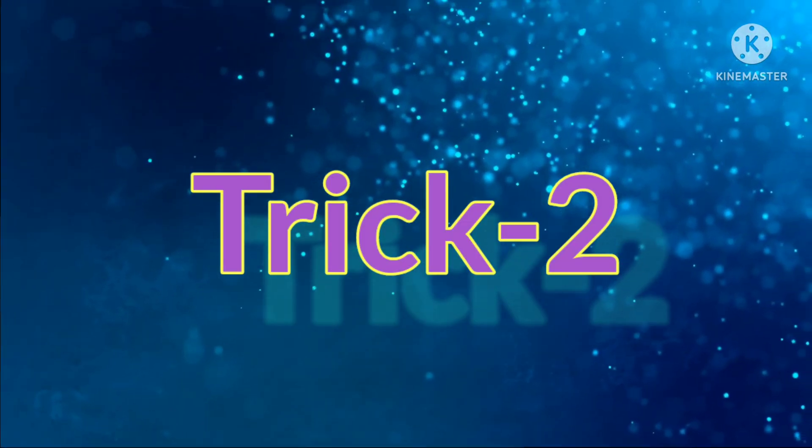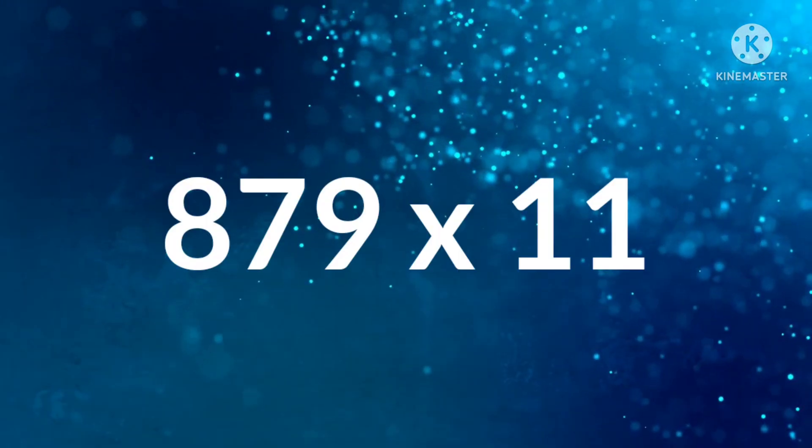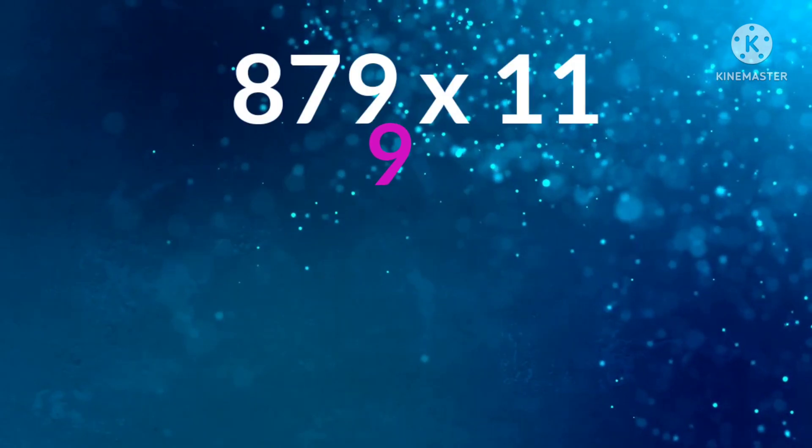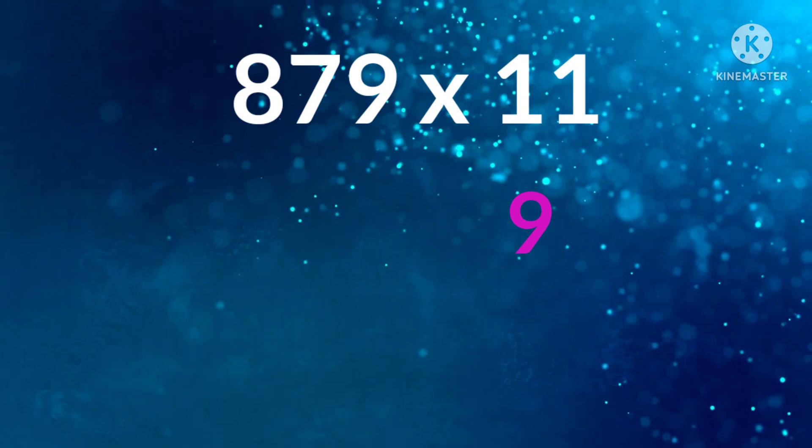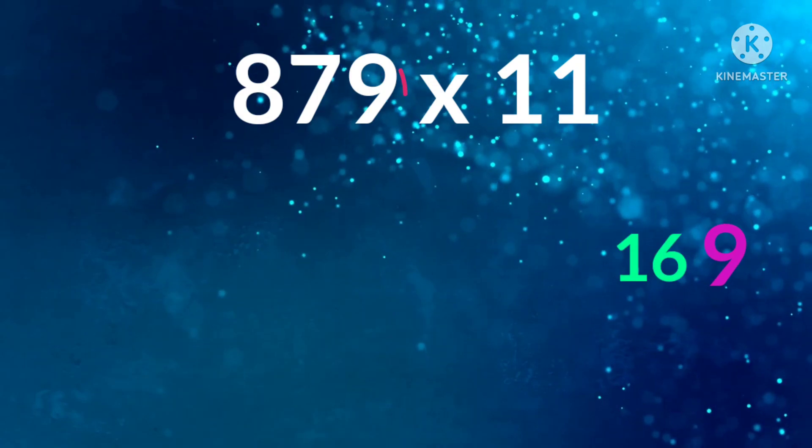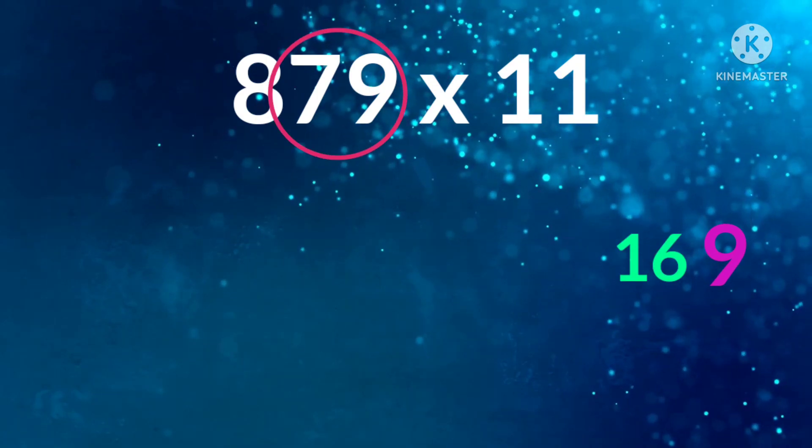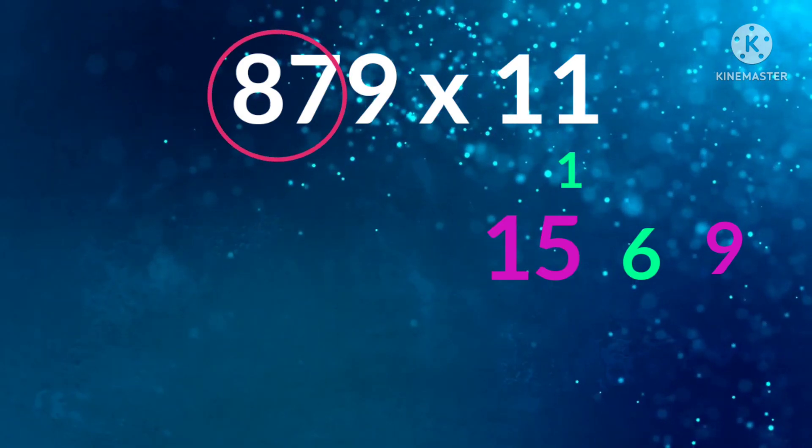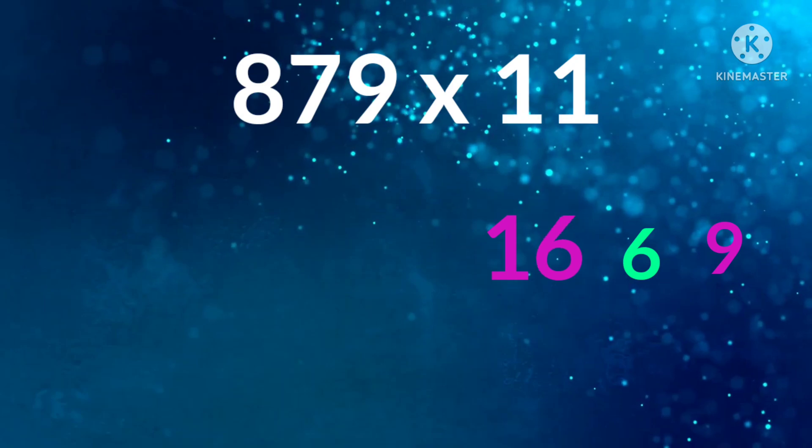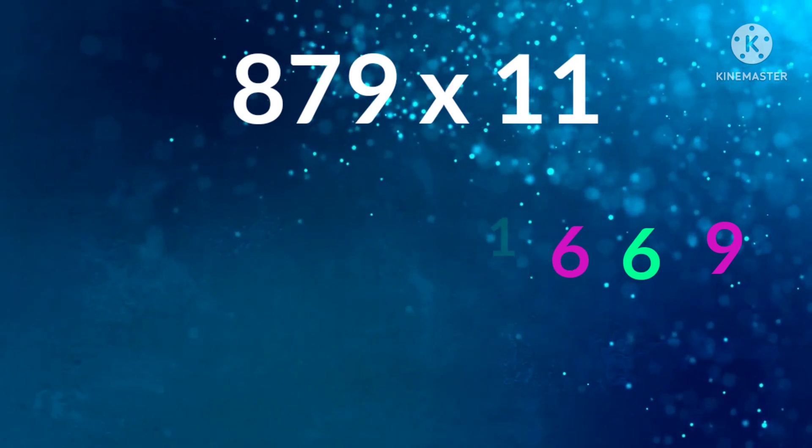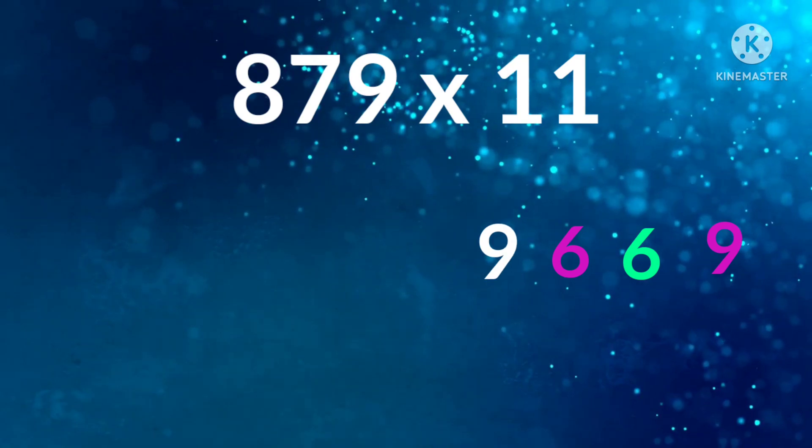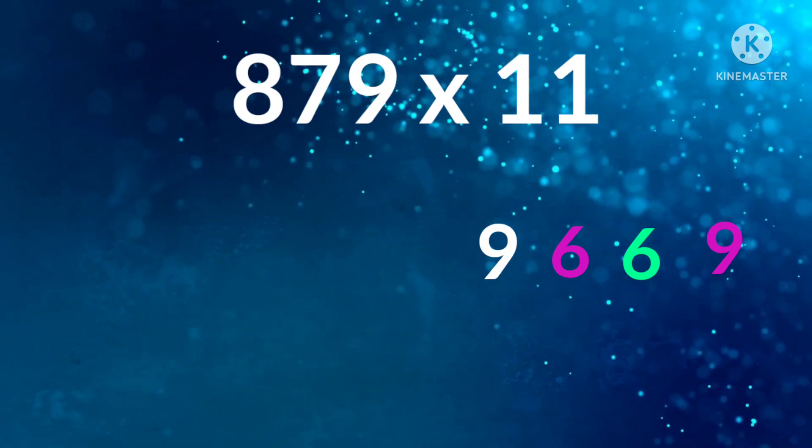Trick number 2. What is 879 into 11? Let's see the trick to solve. First, write the unit digit 9. Then 7 plus 9 is 16, 1 carry over. 8 plus 7 is 15, plus 1 is 16, 1 carry over. Then 8 plus 1 is 9. Answer is 9669.